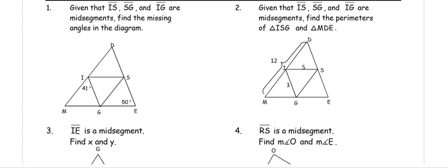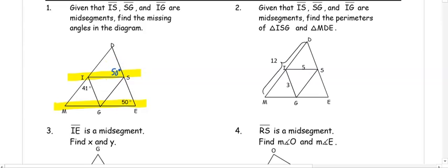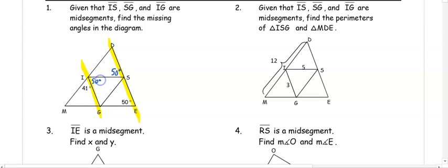Remember, in a mid-segment, we have them parallel to the third side. So if we know that the angle by E is 50, and we have parallel lines, we know that the angle by S is also 50 degrees. Using these parallel lines, 50 is an alternate interior angle, so we have 50 degrees.